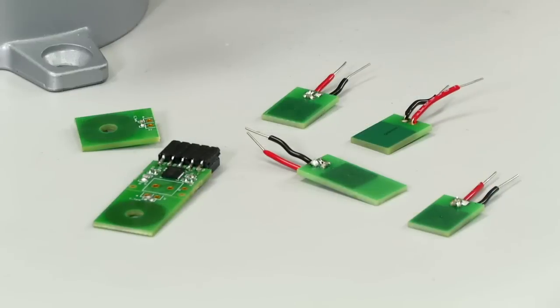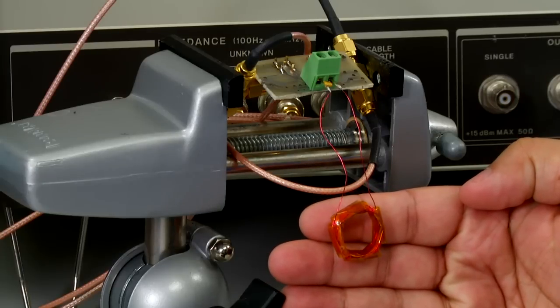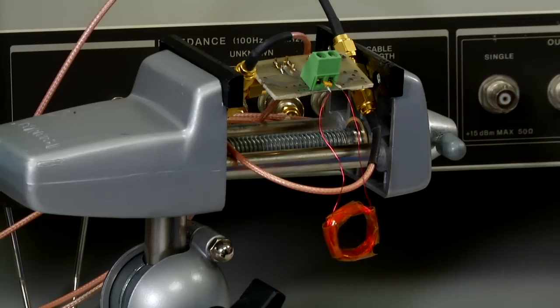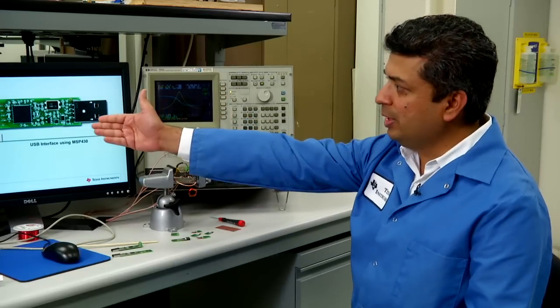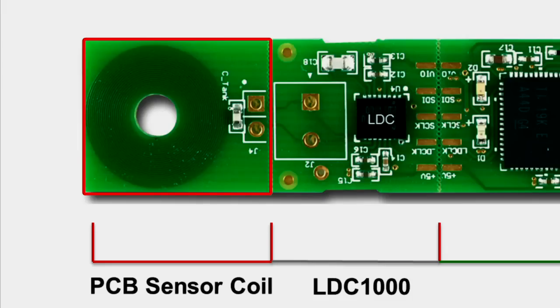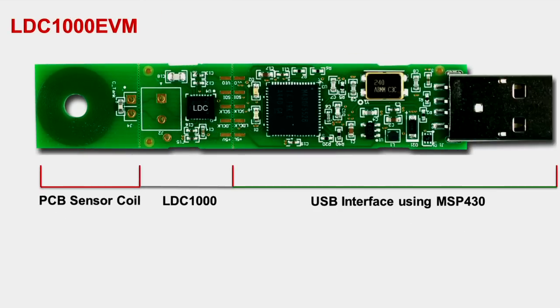Here I have several examples of PCB inductors and here's one discrete inductor. What I'm going to show you is in a few steps we're going to replace the coil on the LDC1000 EVM with this discrete coil.